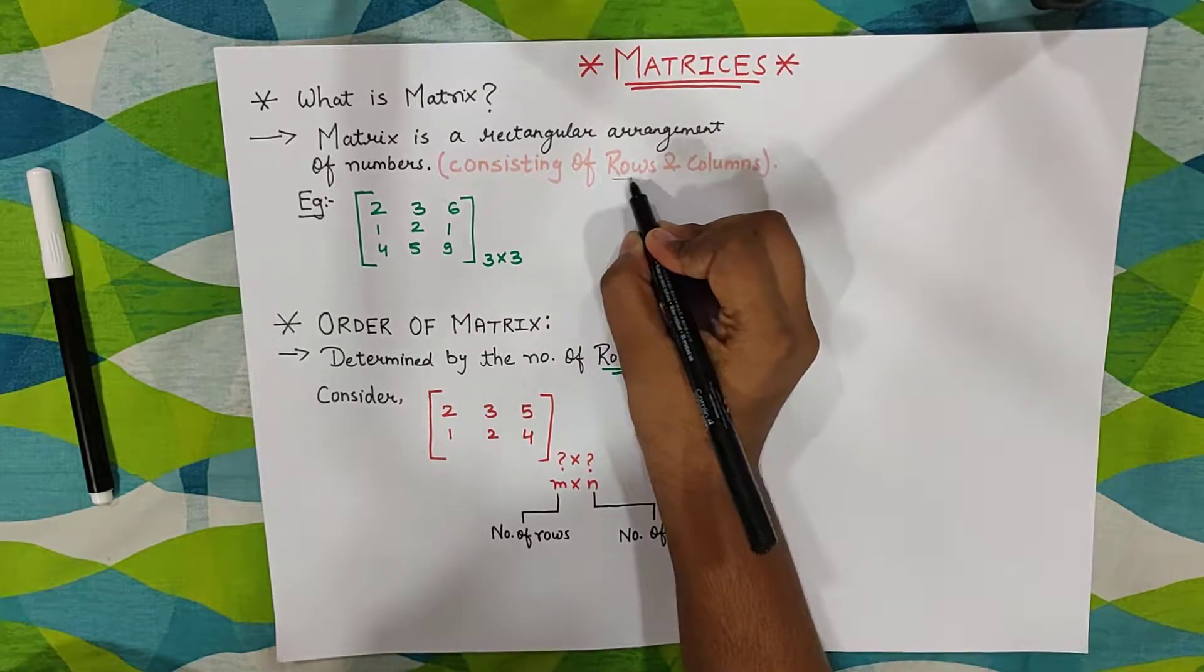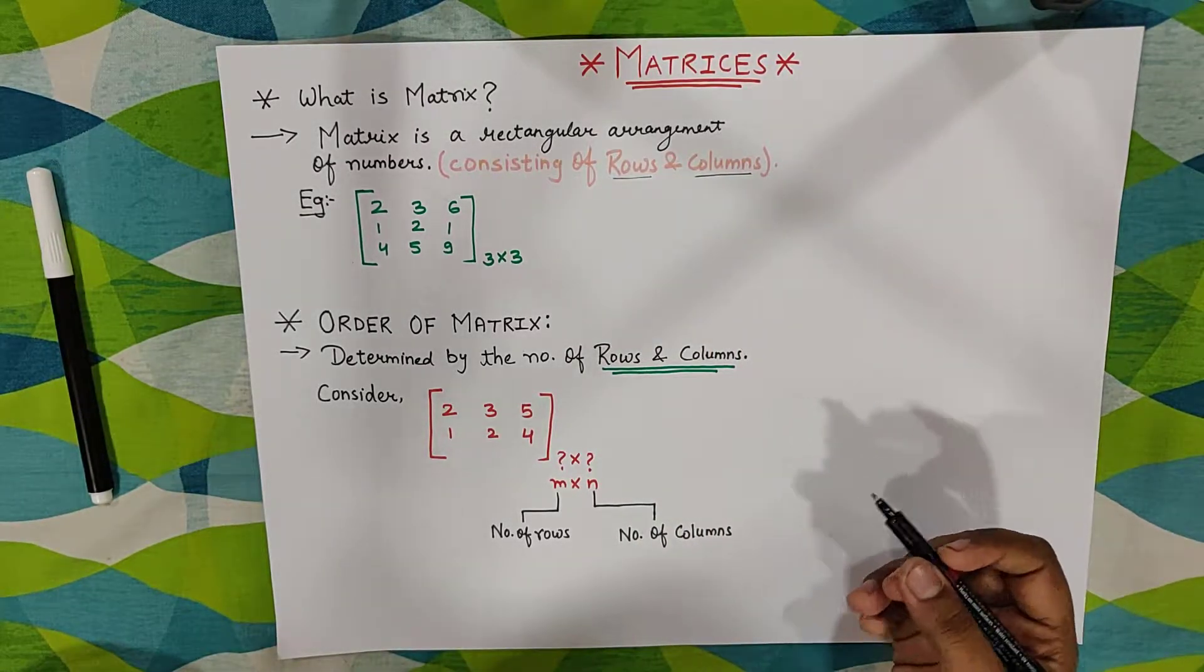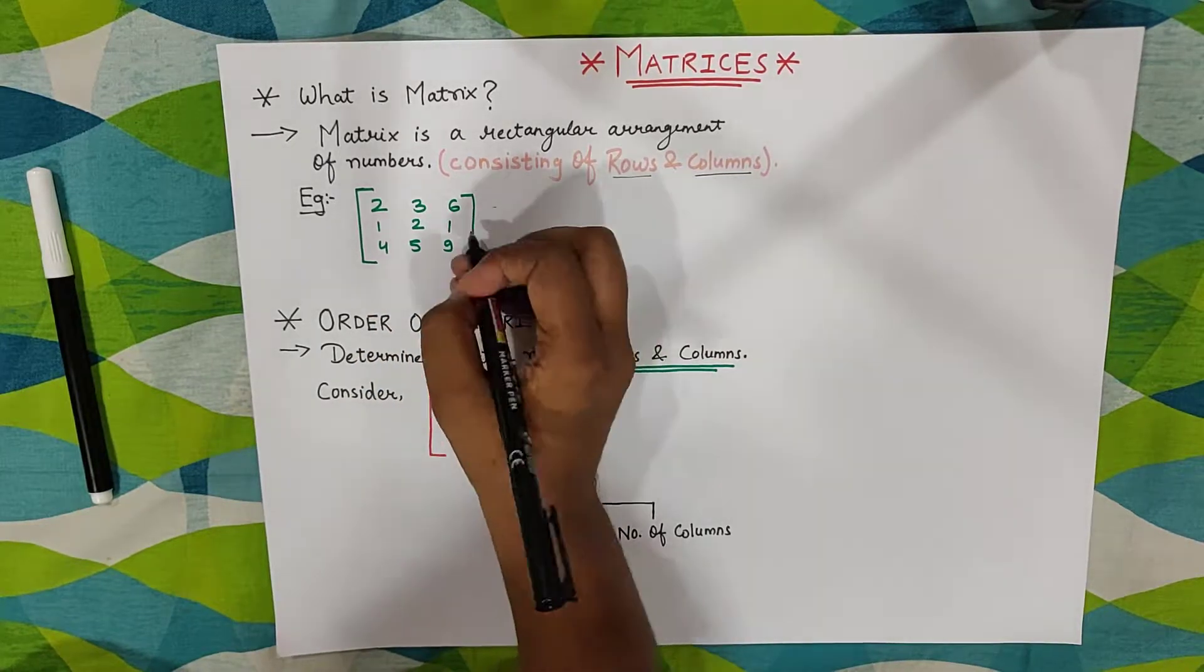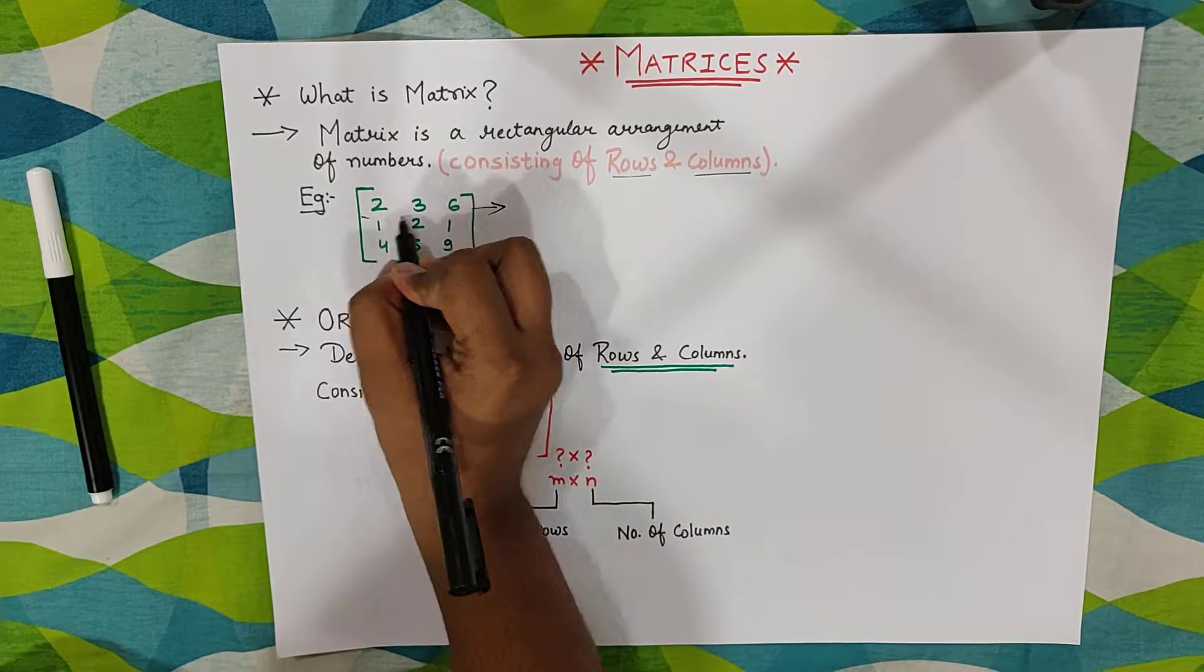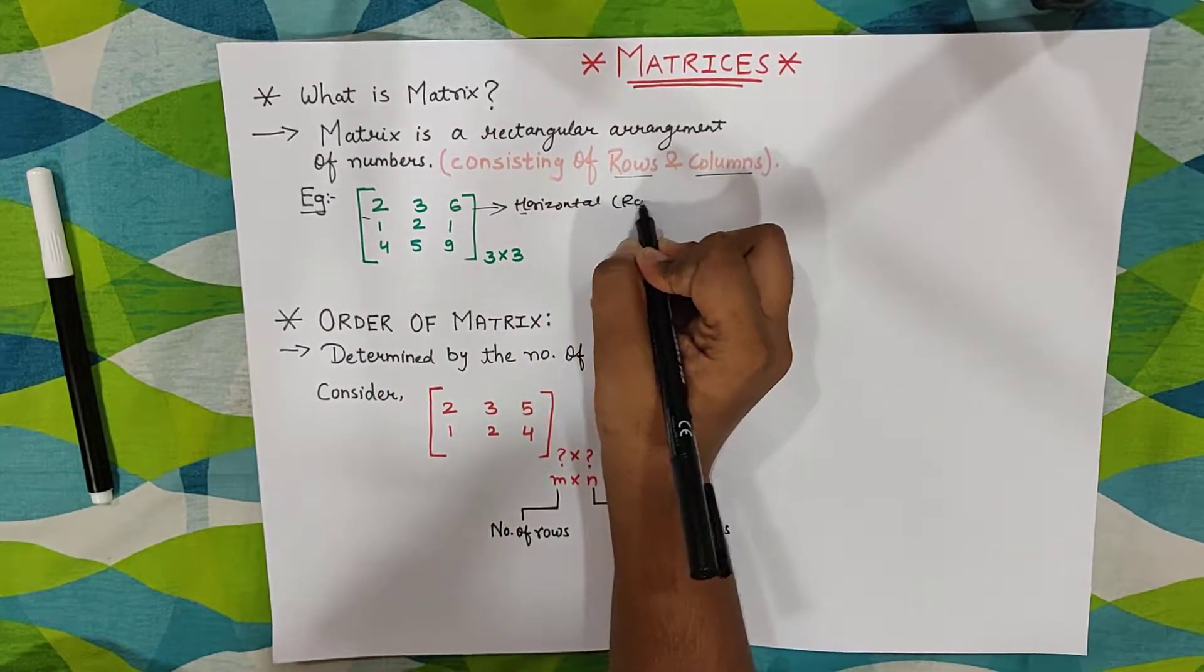What is this rectangular arrangement? It consists of rows and columns. What are rows? Rows are horizontal numbers which are horizontally arranged. This way is horizontal, which are rows.